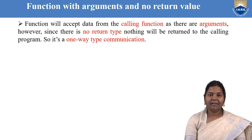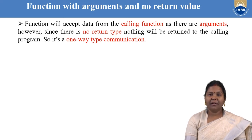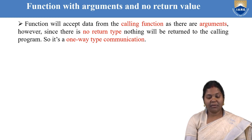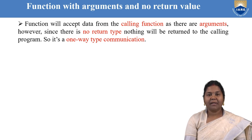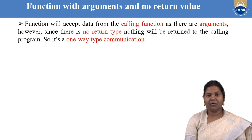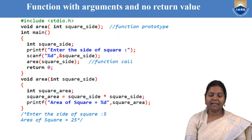The third technique is functions with arguments and no return value. The function will accept data from the calling function as there are arguments, but since there is no return type, nothing will be returned to the calling function. It is also a one-way type of communication, known as downward communication — the calling function passes data as an argument but no data is received back from the called function.